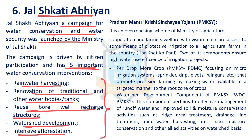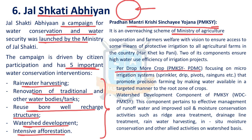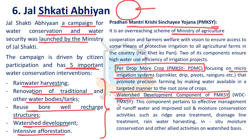Jal Shakti Abhiyan is an umbrella program which includes all other programs, including Pradhan Mantri Krishi Sinchayee Yojana implemented by the Ministry of Agriculture. It implements two major sub-programs: Har Khet Ko Pani — providing water through micro-irrigation systems — and the watershed development component of Pradhan Mantri Krishi Sinchayee Yojana. Both are part of Jal Shakti Abhiyan.